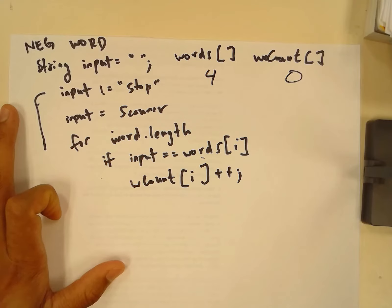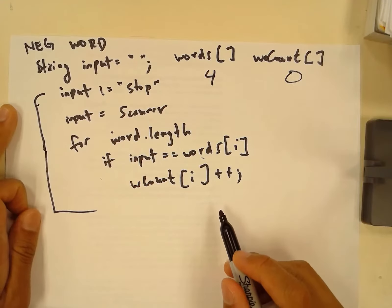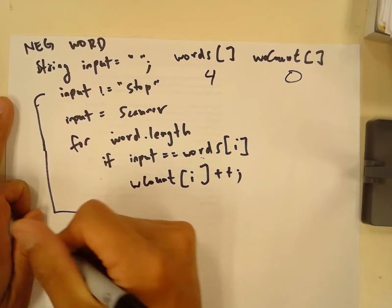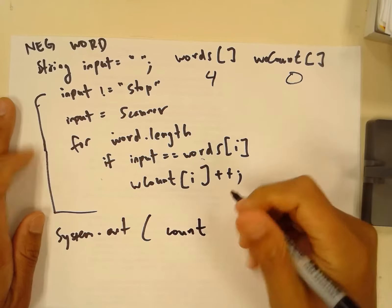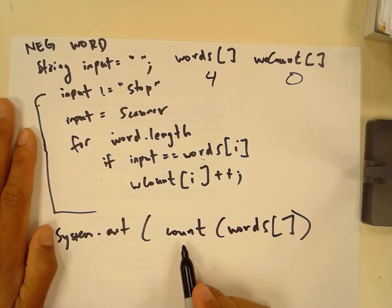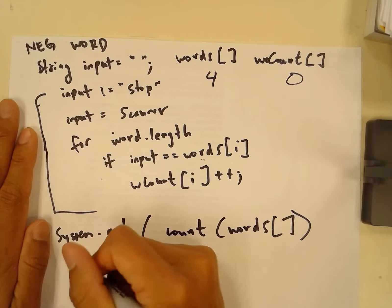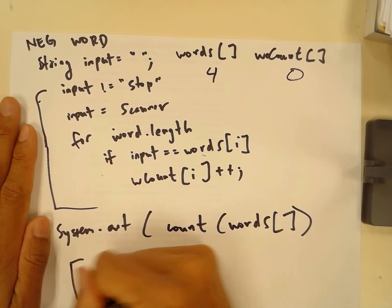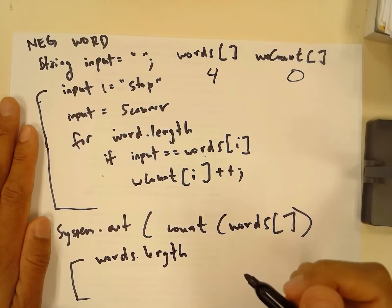We're going to define a count method that counts the total ratio of negative words to non-negative words. After finishing the while loop, we call System.out.println and run count, sending it the wCount array. What count is going to do is run a for loop that goes words.length number of times.